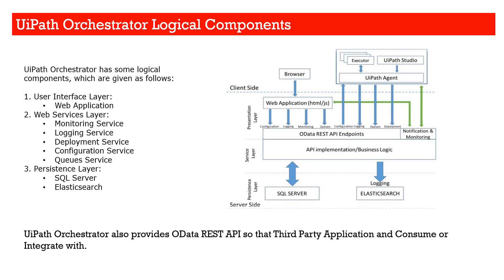At the client side, we have a browser, an Executor, UiPath Studio, and UiPath Assistant (previously called UiPath Agent). Using the browser, we access the web application built on the .NET framework, with the frontend in HTML and JavaScript. In the persistence layer, there are web services like configuration, logging, monitoring, and queues. The UiPath Robot also accesses those through different calls. One way of accessing configuration is via REST API endpoints — UiPath Orchestrator provides REST API endpoints to perform all these things.